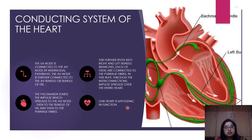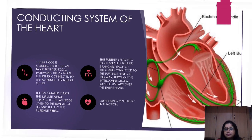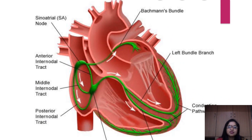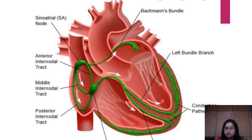Our heart is myogenic in function — its rhythm is entirely controlled by the muscles of the heart — though it does have some neurogenic input from nerves supplying the heart. The conducting system runs from the SA node through internodal tracts to the AV node, then through the AV bundle — the bundle of His — splitting into right and left bundle branches, ending in the Purkinje fibers spread over the entire cardiac muscle.